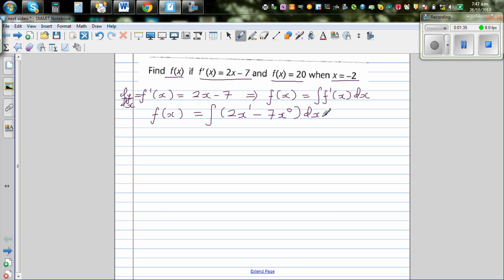Now in integrating polynomials you increase the power of the variable by 1, so this is 2x squared over 2 minus 7x raised to 1 over 1 plus c. So this is f(x) is equal to x squared minus 7x plus c.